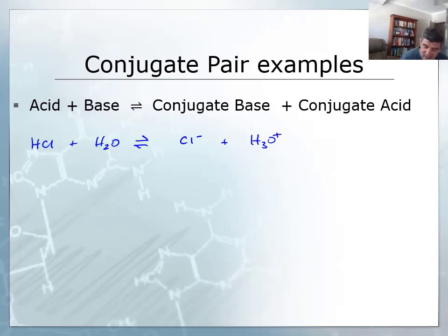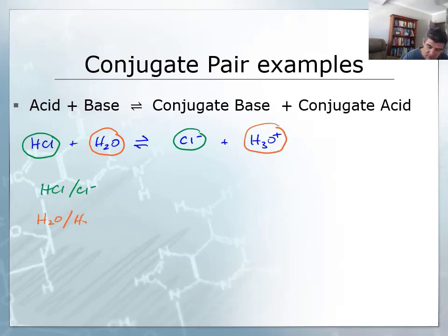In order for us to identify pairs, then, we have an acid and its conjugate base. So one pair would be HCl and Cl-, and the second pair would be the base. In this case, water is actually acting as a base because it's accepting a proton to become the hydronium ion, H3O+.